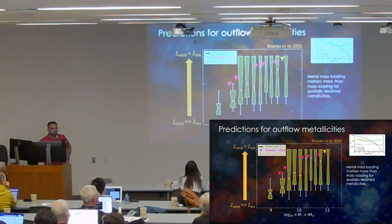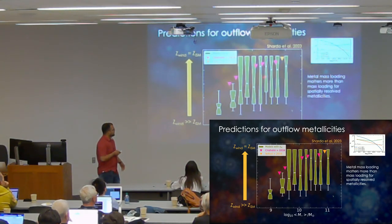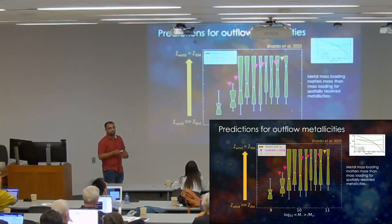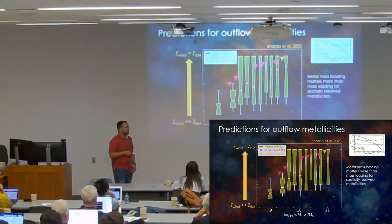However, measurements of wind metallicities remain really, really scarce. So today there's only very, very few galaxies where we have been able to measure a wind metal loading factor, not just the mass loading factor. And even in these galaxies, these numbers are upper limits here. And the reason for that is we are only looking at winds in one particular phase. We are not looking at the multiphase component of galactic winds. The predictions from the model say that metal mass loading seems to be a lot more important than mass loading in general for spatially resolved metal distributions.